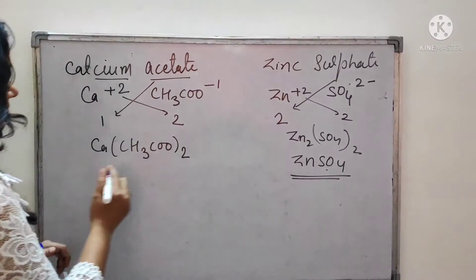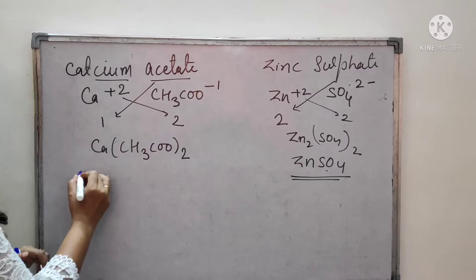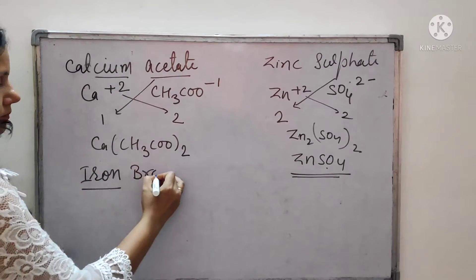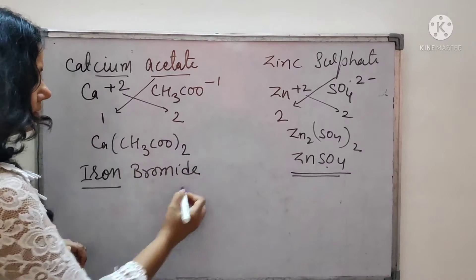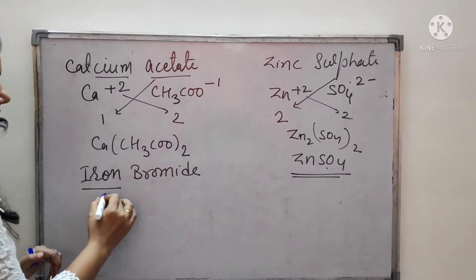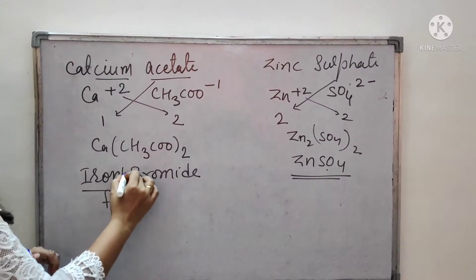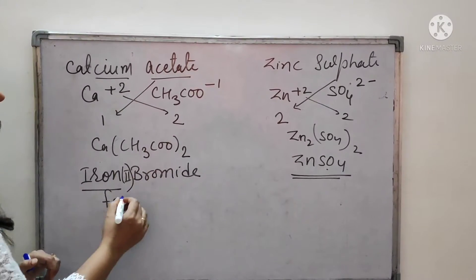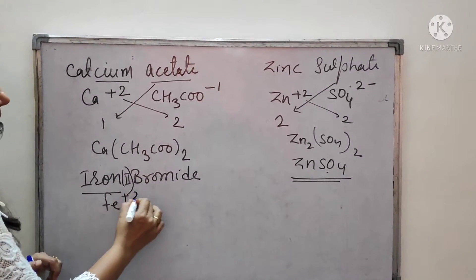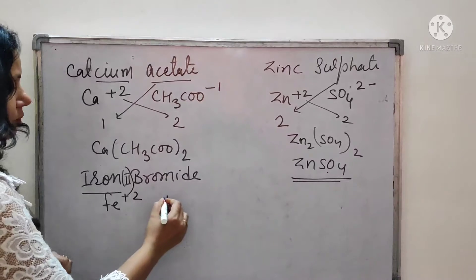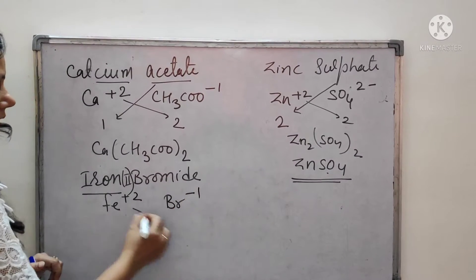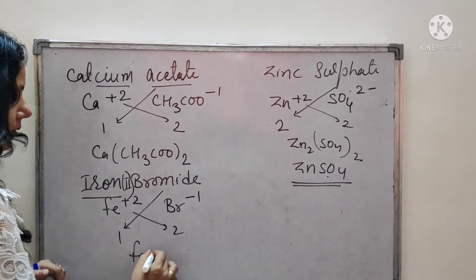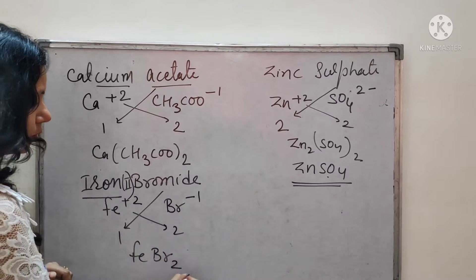Next example: iron bromide. Since iron has two valencies, the valency is given in the name. For iron(II) bromide, iron is Fe2+ and bromide is Br−. Applying the criss-cross method, we place 2 on bromide and 1 on iron. The formula becomes FeBr2.